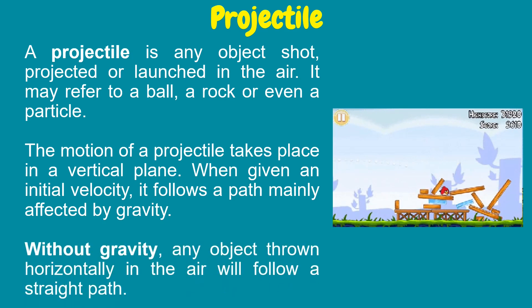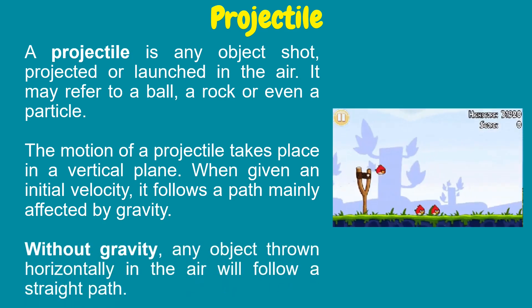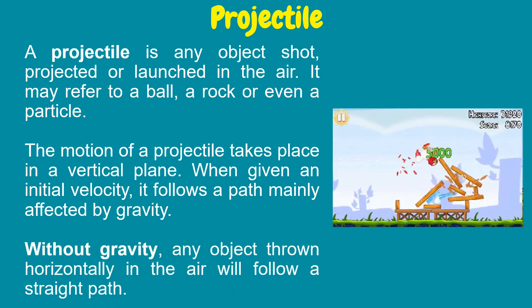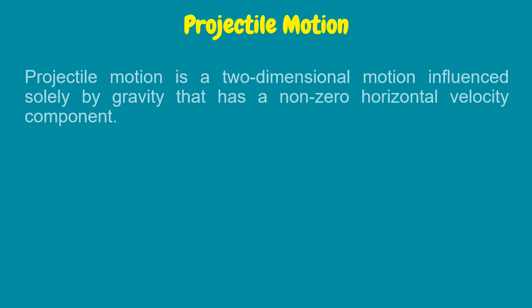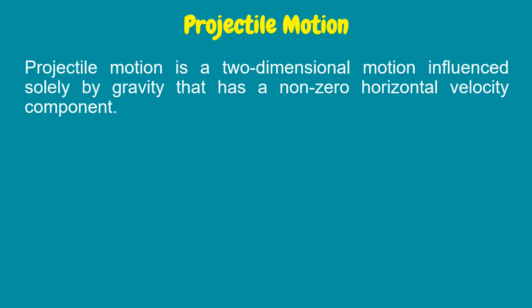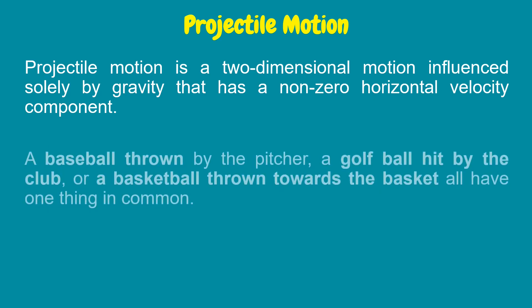Without gravity, any object thrown horizontally in the air will follow a straight path. Projectile motion is a two-dimensional motion influenced solely by gravity that has a non-zero horizontal velocity component.